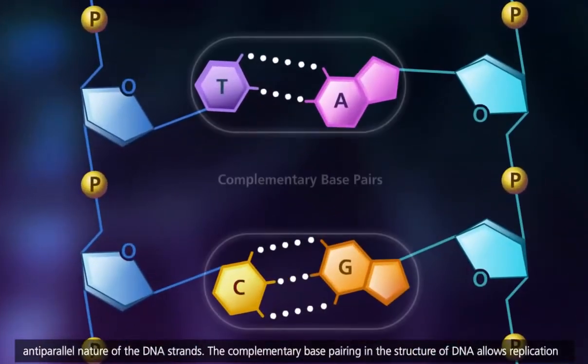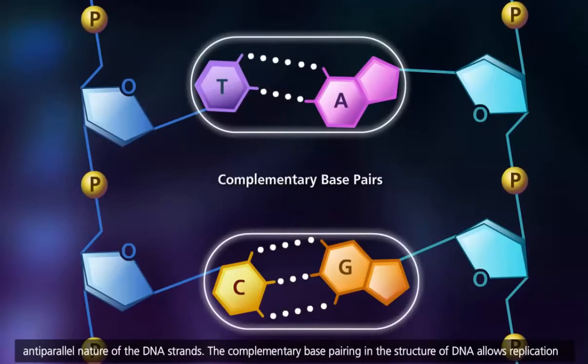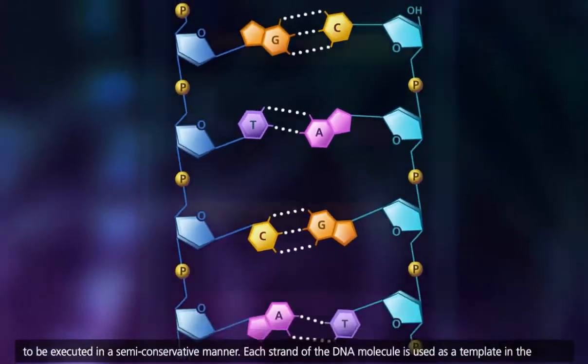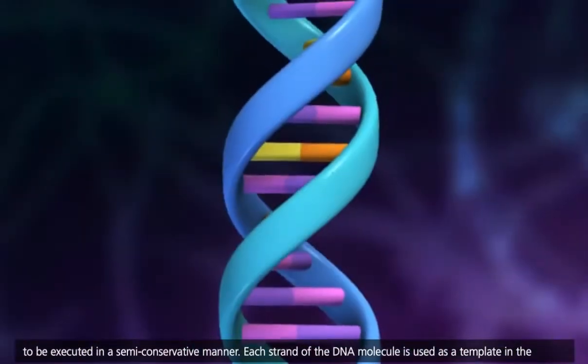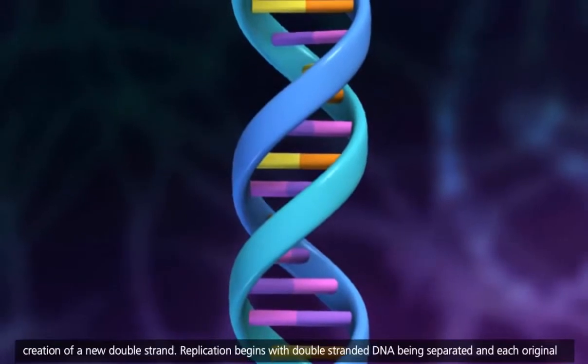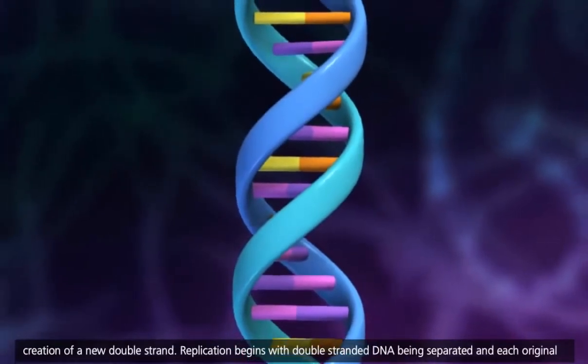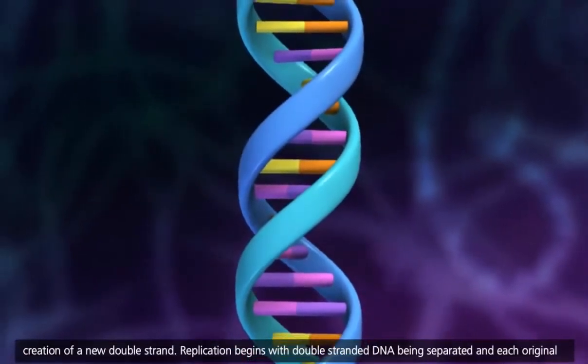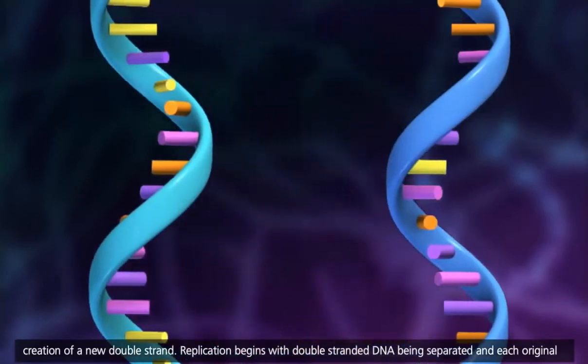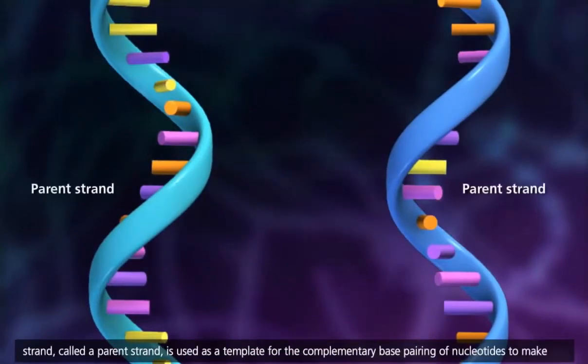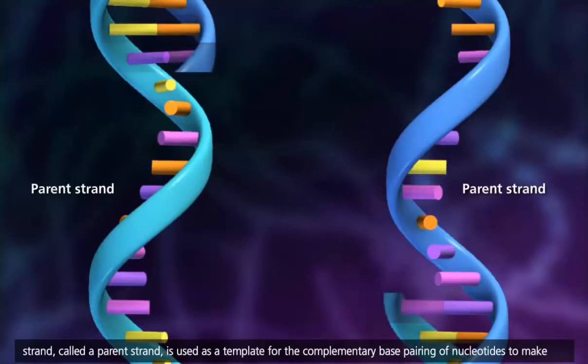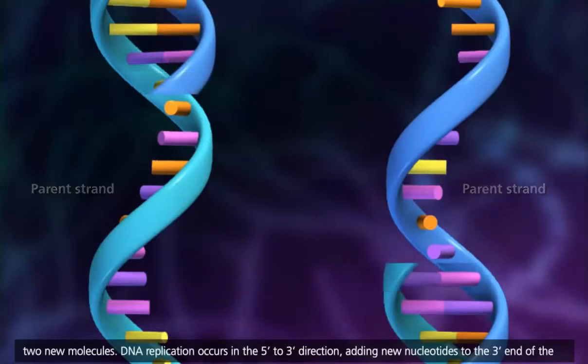The complementary base pairing in the structure of DNA allows replication to be executed in a semi-conservative manner. Each strand of the DNA molecule is used as a template in the creation of a new double strand. Replication begins with double-stranded DNA being separated, and each original strand, called a parent strand, is used as a template for the complementary base pairing of nucleotides to make two new molecules.